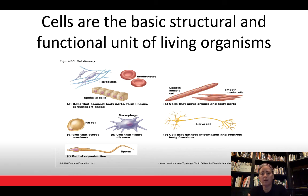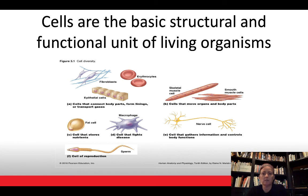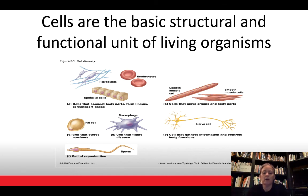Cells have many different functions: connecting body parts, conveying information, and helping us move. The way cells are designed enables them to complete their task. For example, sperm are highly mobile, and skeletal muscle cells are huge multinucleated cells that contract and generate tension, which is what enables our skeletal system to move.